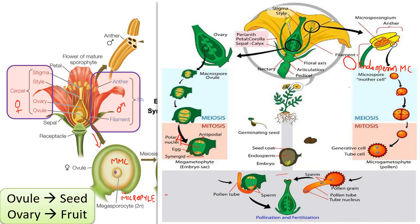After this sexual fusion, the zygote undergoes mitosis, forming a multicellular embryo, whereas the primary endosperm nucleus transforms into the endosperm, which provides nutrition for the developing embryo. The integuments of the ovule form the seed coat, the ovary becomes the fruit, and the ovary wall becomes the pericarp or fruit wall. This is how the ovule becomes a seed and the ovary becomes a fruit.